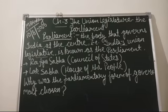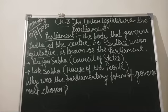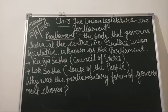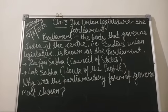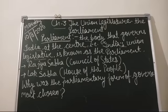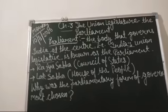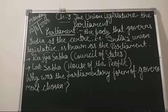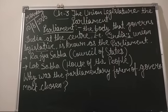Parliament consists of two houses: the Rajya Sabha, also known as the Council of States, and the Lok Sabha, also known as the House of the People. Parliament is the highest law-making body of the country. The members of the Lok Sabha and the Rajya Sabha are called Members of Parliament. Parliament holds its sessions at Sansad Bhavan, or Parliament House, located in New Delhi.